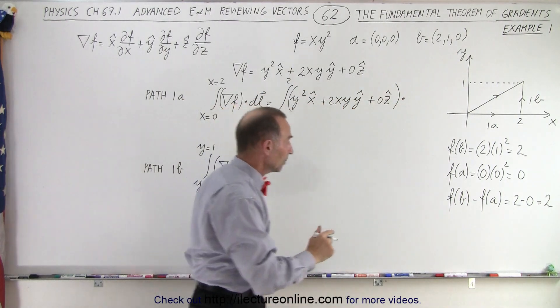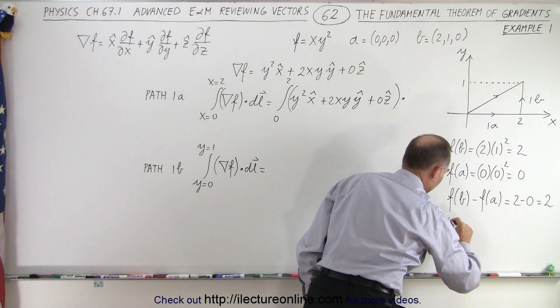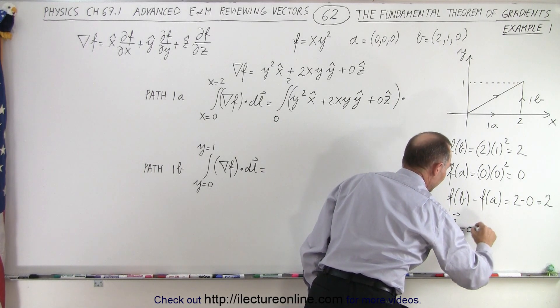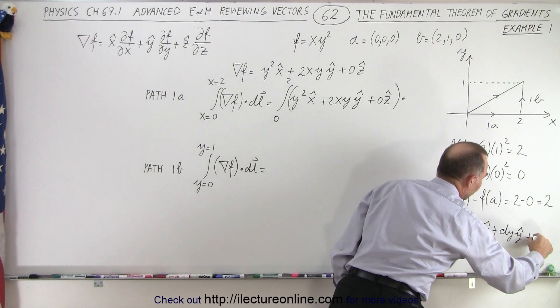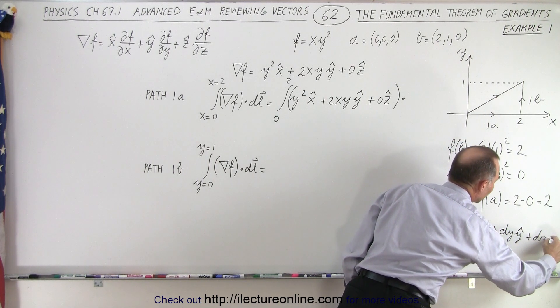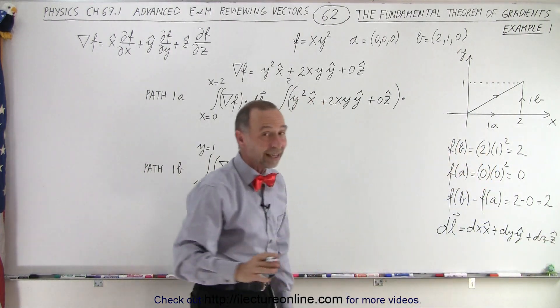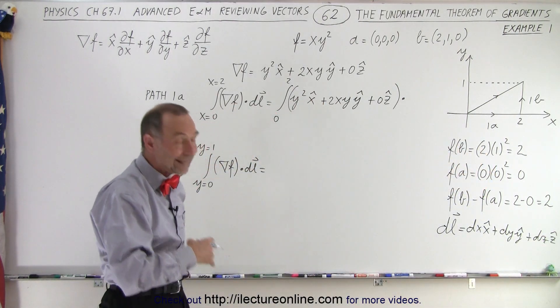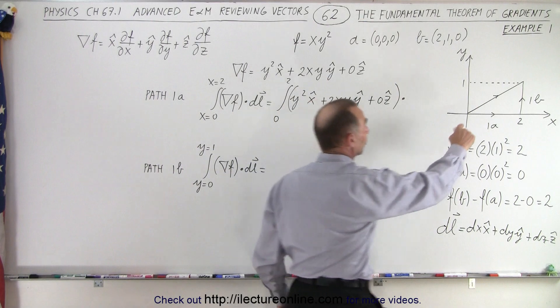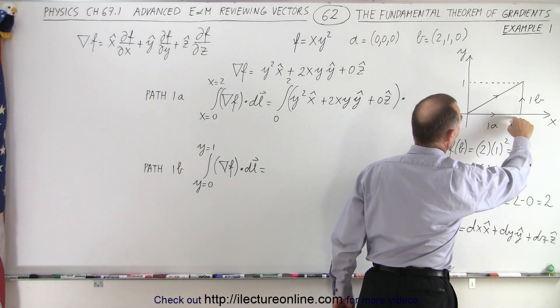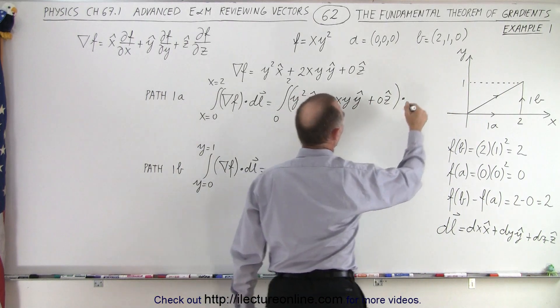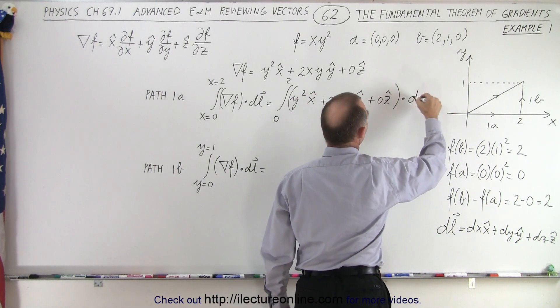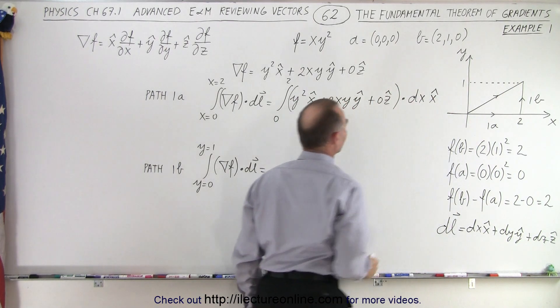And then we're going to multiply it times dl. Now remember that dl can be defined as this. dl is defined as dx in the x direction, plus dy in the y direction, plus dz in the z direction. And of course, in this case, dy and dz both are going to be 0, because z and y does not change going from here to here. Only this portion is valid, so we're going to dot this with dx in the x direction like this.